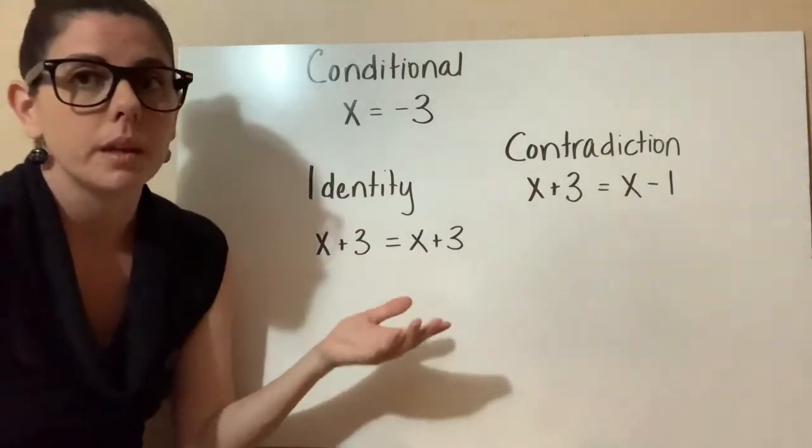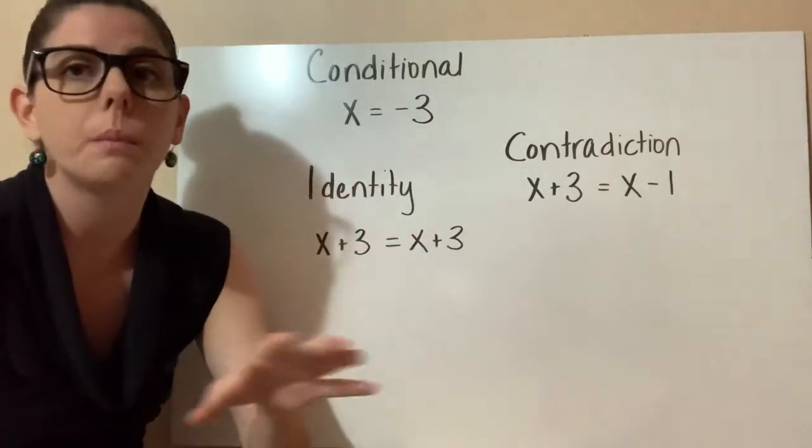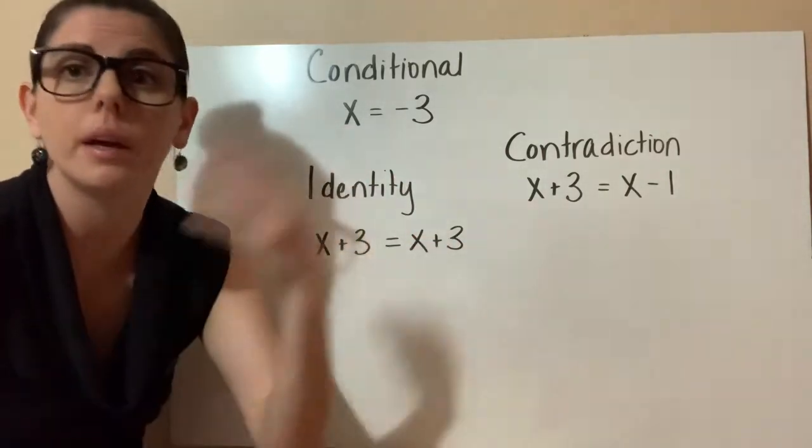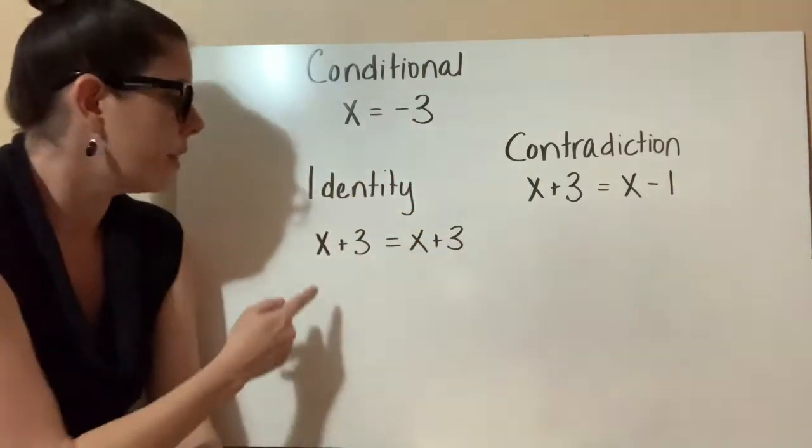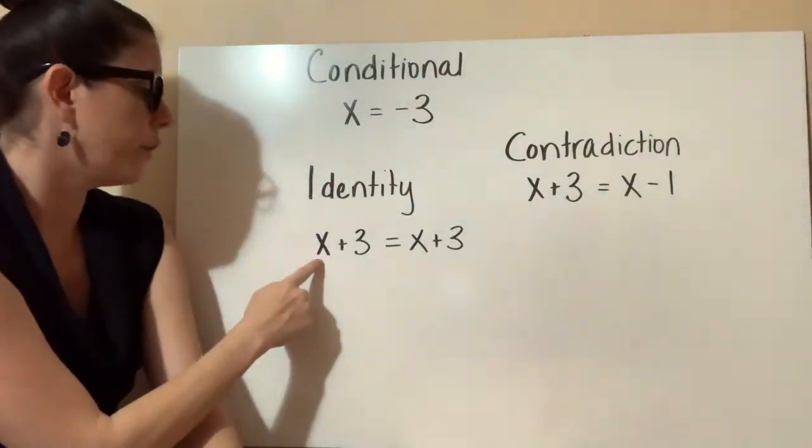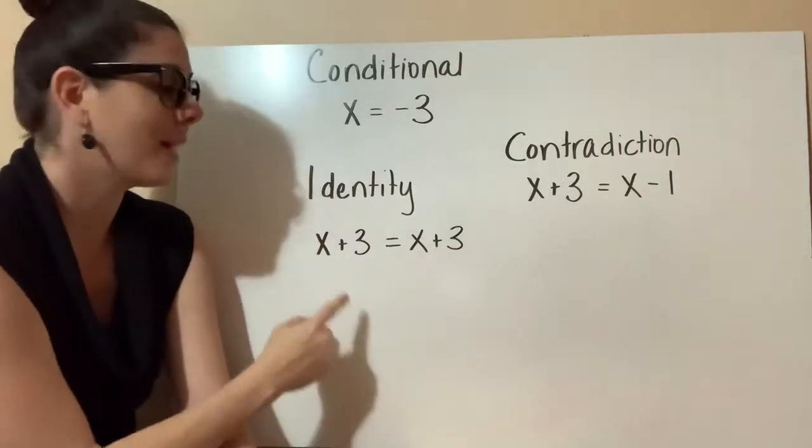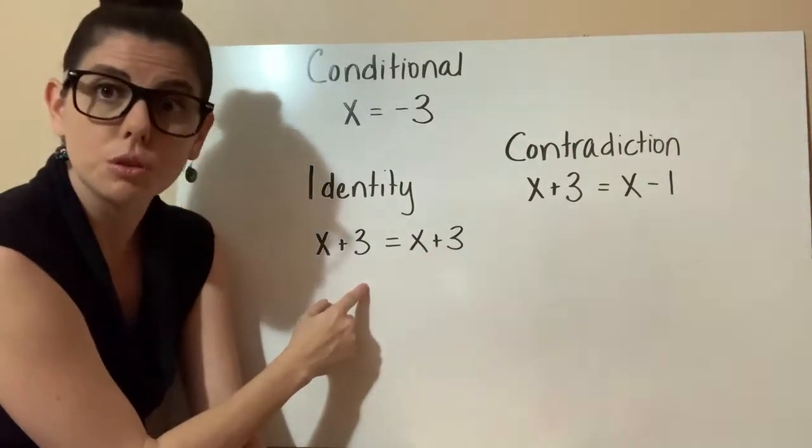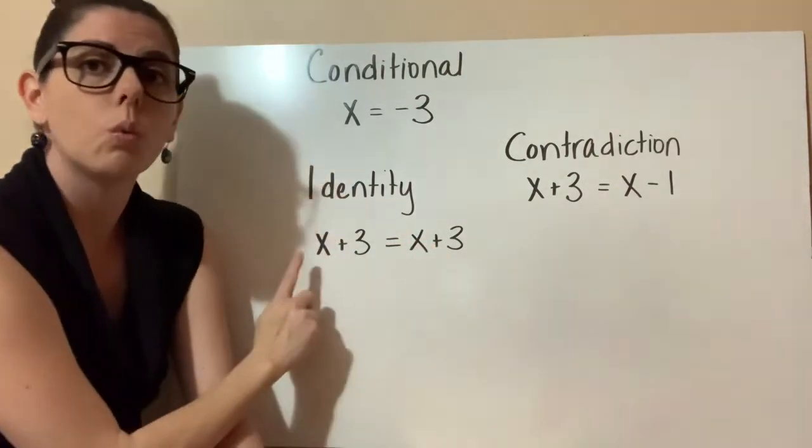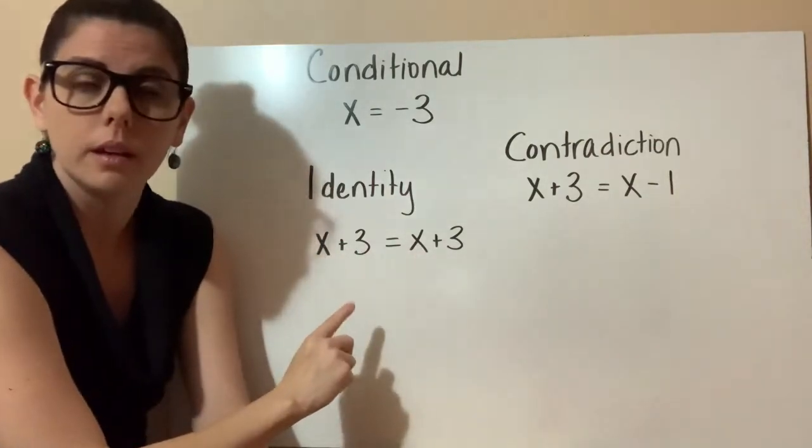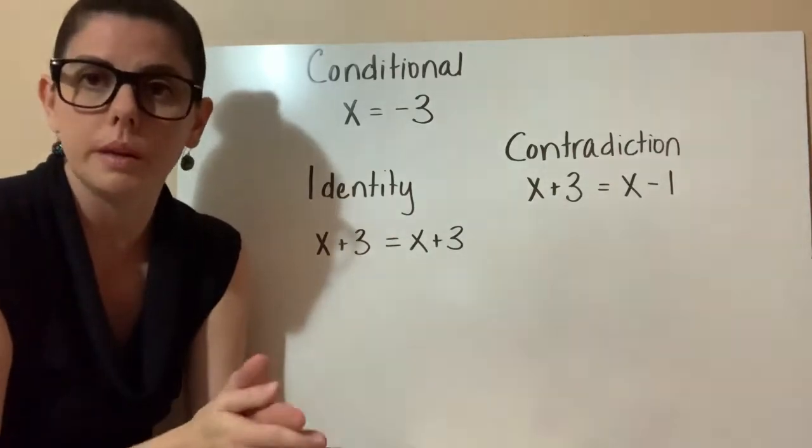And basically what that means is no matter what you put in for x, no matter what you pick, it'll work. You could pick negative 1.2, positive 3, or negative one-fourth. It doesn't matter what number you work. There's an infinite amount of solutions. So if I pick 1, 1 plus 3 equals 4, 1 plus 3 equals 4. If I pick negative 1, negative 1 plus 3 equals 2, negative 1 plus 3 equals 2. So no matter what you pick, it'll work. x can equal anything. So all real numbers would be the solution for that one.